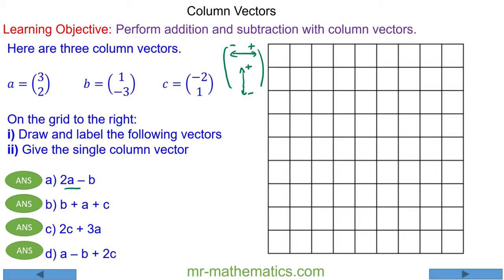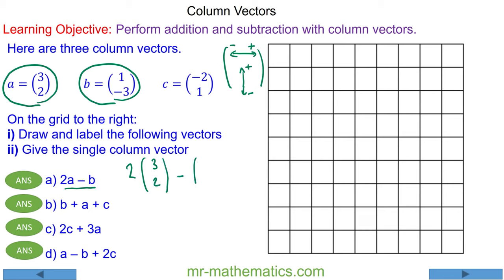So we have 2a minus b. Here is the column vector for a and here is the column vector for b. So we have two lots of a: two lots of 3 to the right and 2 up, minus b which is 1 and negative 3. I'm going to work out 2 lots of 3 which is 6 to the right, and 2 lots of 2 up which is 4 up. A negative times 1 makes this a negative 1, and a negative times a negative 3 makes that a positive 3, so we're moving to the left and we're moving up.